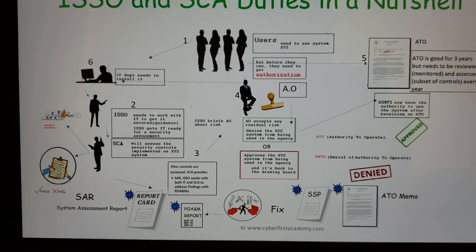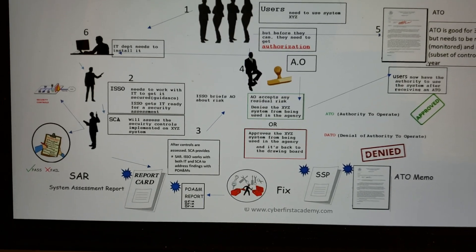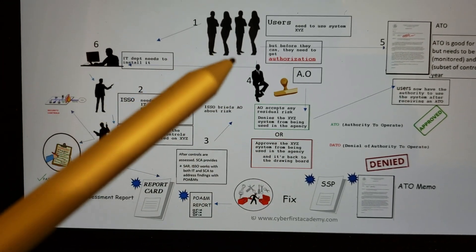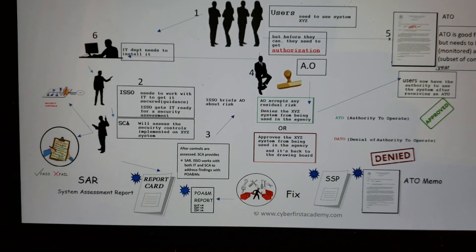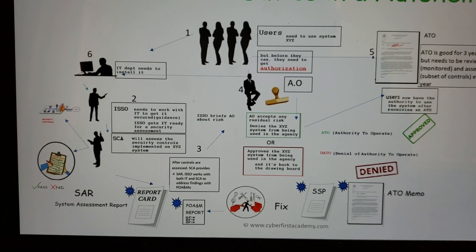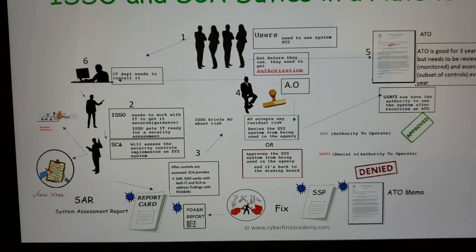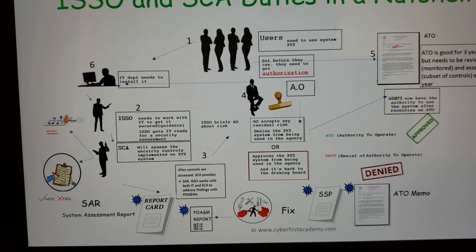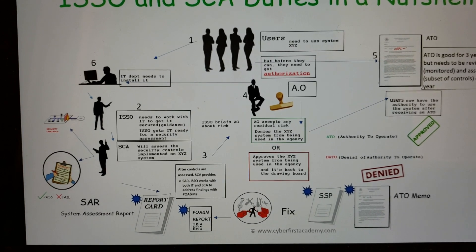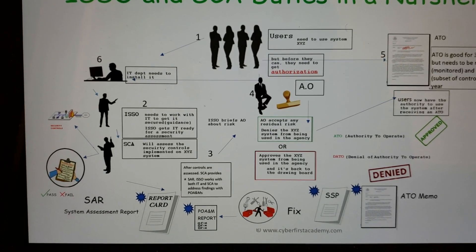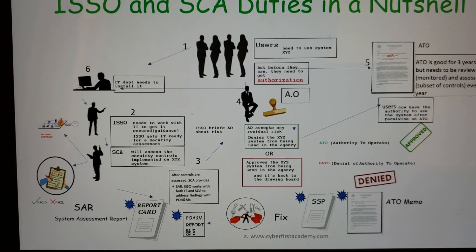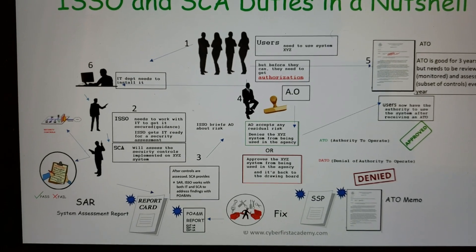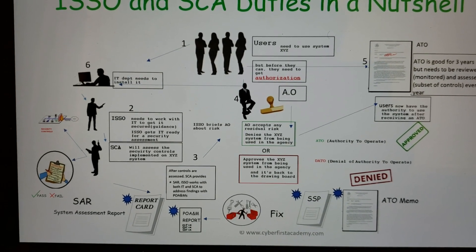Once the project team has the POA&M, the SAR, and the SSP — the System Security Plan — the ISO briefs the Authorizing Official on the risk posture of the system. The AO reviews all the information in the security package and makes a risk-based decision on whether the system should be authorized or denied.